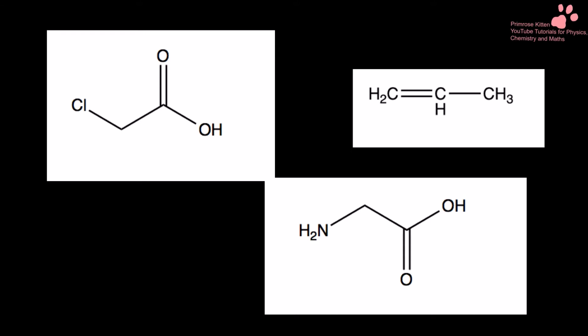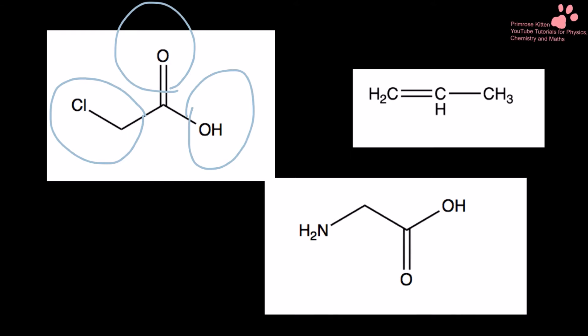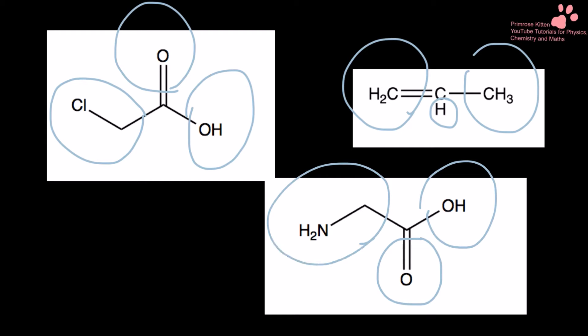Any carbon that has a double bond coming off it is not going to be chiral. For example, this carbon here has this group, this group, and this group - yes, they are all different, but there's only three of them, so it's not going to be chiral. Similarly, this one in the middle has group one, group two, and group three - again, only three groups. And this one here also has only three groups. Three groups does not make it chiral - it needs four groups.